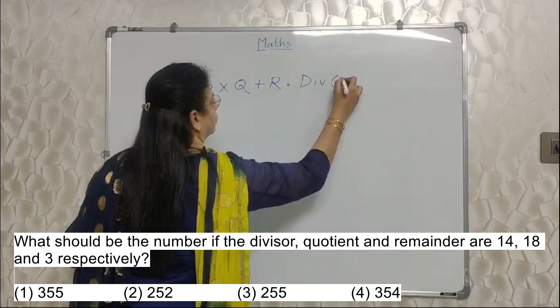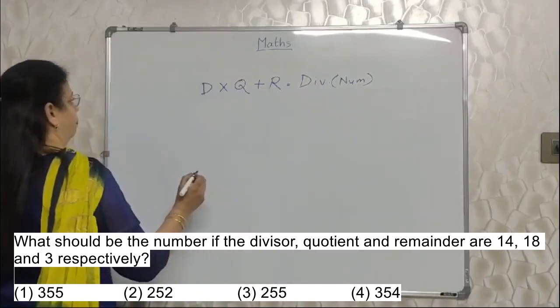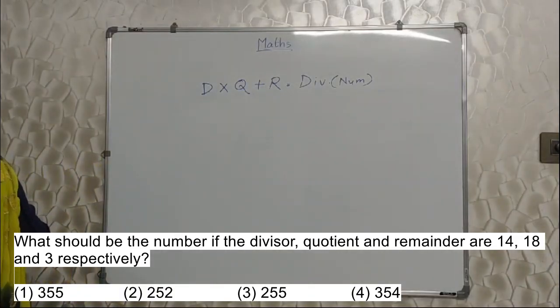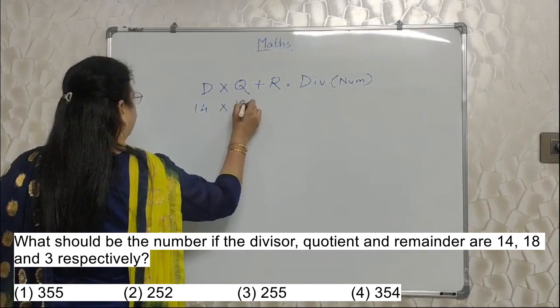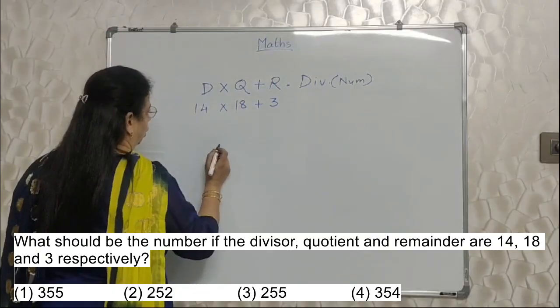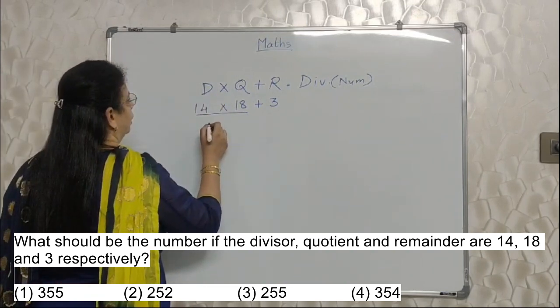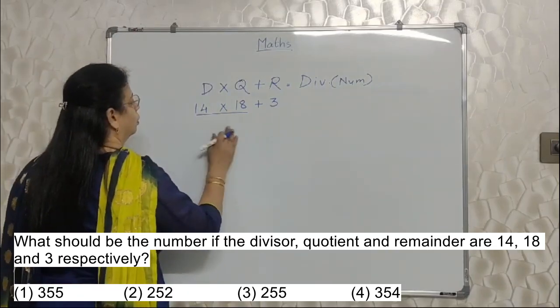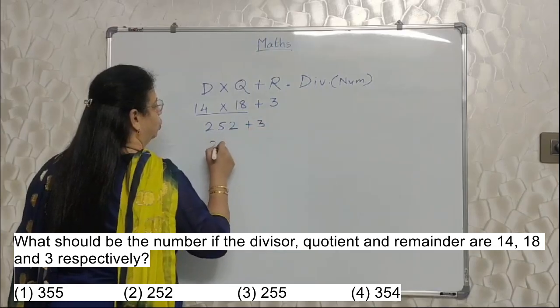Formula is divisor into quotient plus remainder is equal to dividend. Dividend means number, number means dividend, same thing. So here what have they given? Divisor, quotient and remainder as 14, 18 and 3 respectively. Means divisor is 14, quotient is 18, remainder is 3. Here again we have to follow the BODMAS rule. So obviously we need to do this first, 14 into 18, that is 252. Then plus 3, that is 255.